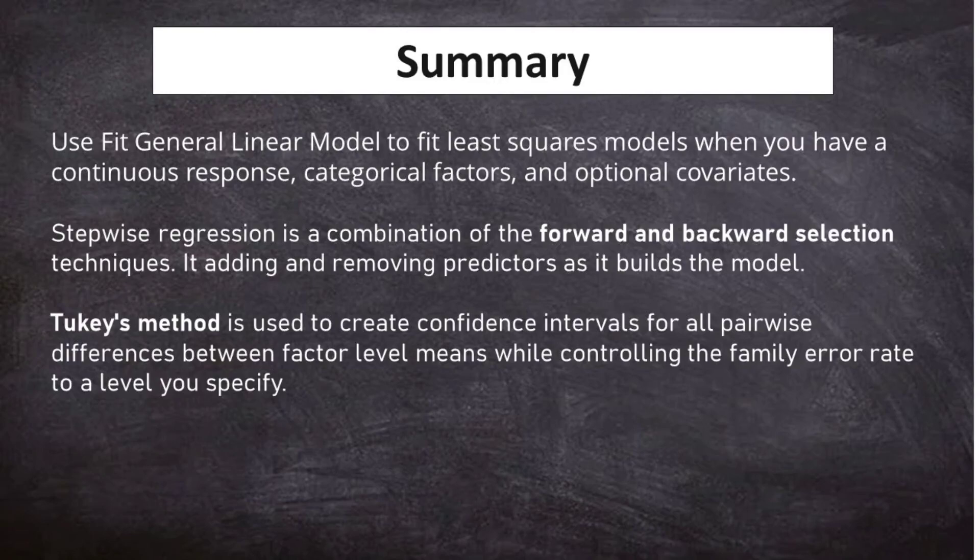Use Fit General Linear Model to fit least squares models when you have a continuous response, categorical factors, and optional covariates. Stepwise Regression is a combination of the forward and backward selection techniques, adding and removing predictors as it builds the model. Tukey's method is used to create confidence intervals for all pairwise differences between factor level means while controlling the family error rate to a level you specify.